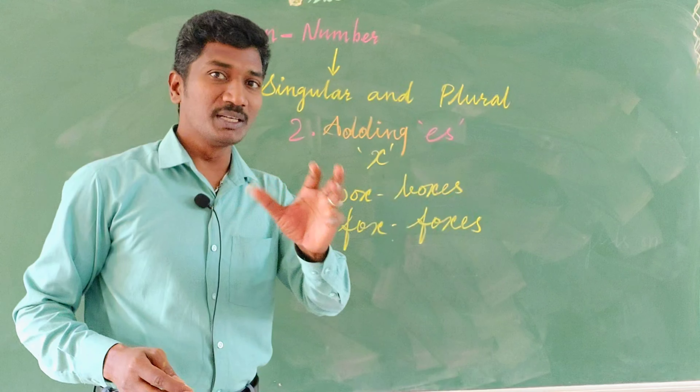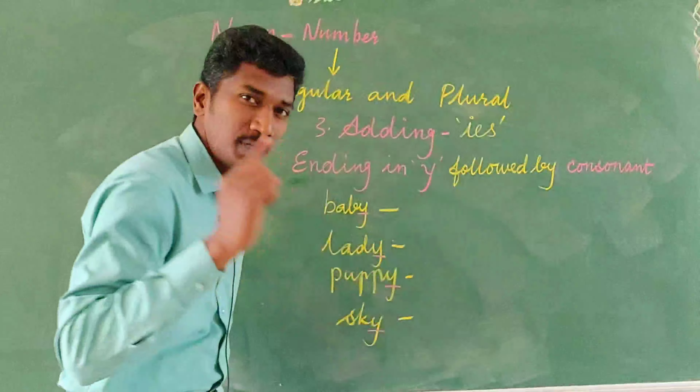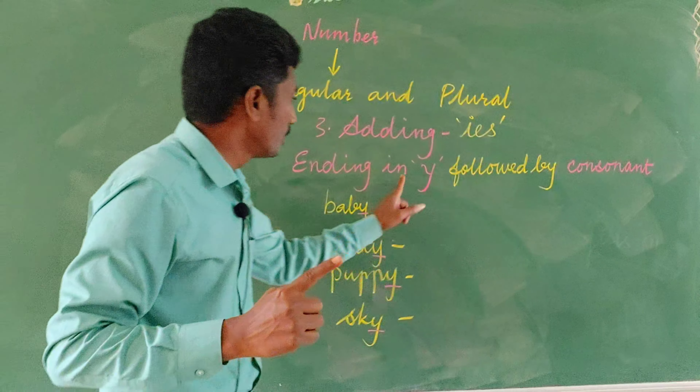Here is the next — the third rule. We are going to the next, slowly to the difficult part: adding 'ies'. When do we add 'ies'? When the singulars are ending in 'y', followed by a consonant. If the 'y' follows a consonant, then we add 'ies'. For example: baby → babies, ladies, puppies, and skies.